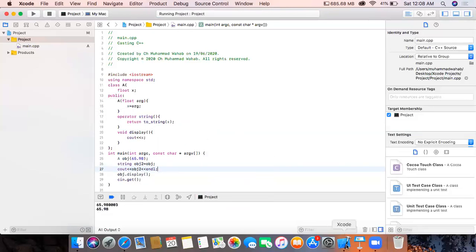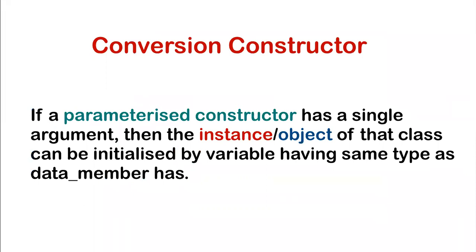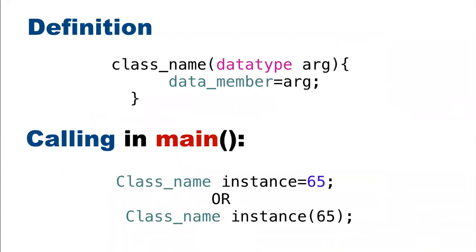Now let's move on to our next topic: conversion constructor. A conversion constructor says that if a parameterized constructor has a single argument, then an instance or object of that class can be initialized by a variable having the same type as the data member. Its definition is similar to a regular constructor — the class name with an argument — and we initialize that data member. In the calling function, we can either initialize the instance directly to a number, or pass it as an argument.